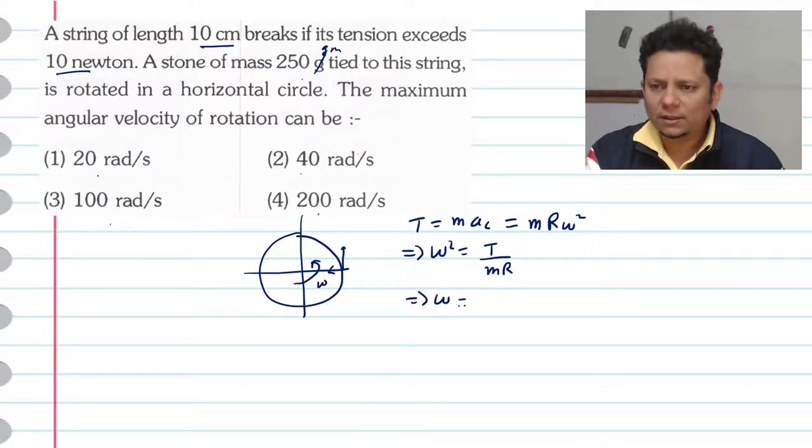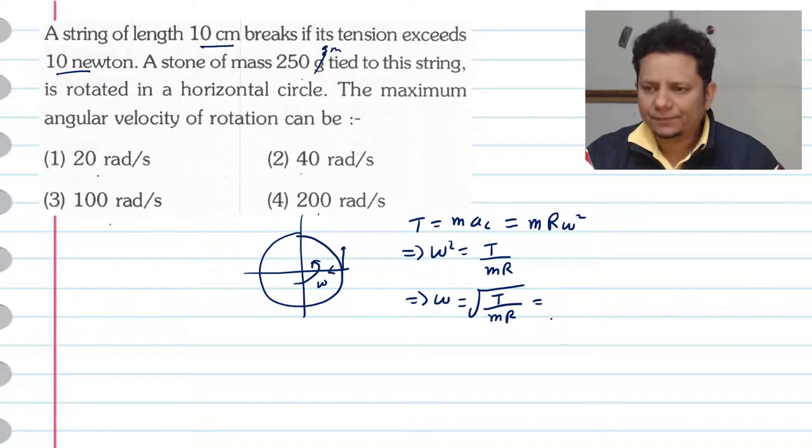And which implies omega will be equal to under root T by M R. 10 into 10 to the power minus 2.